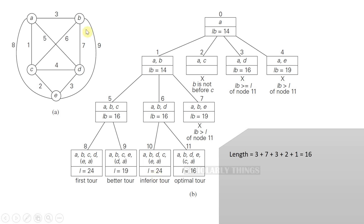At node 11, it is suggesting that we take the route A, B, D, E, C, and then A. It will be 3 plus 7 plus 3 plus 2 plus 1. Total is 16.